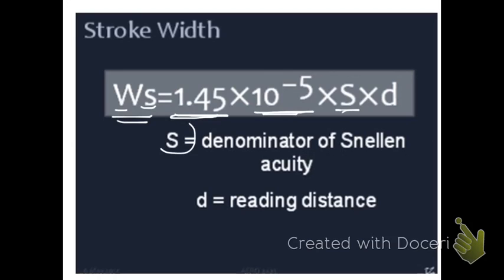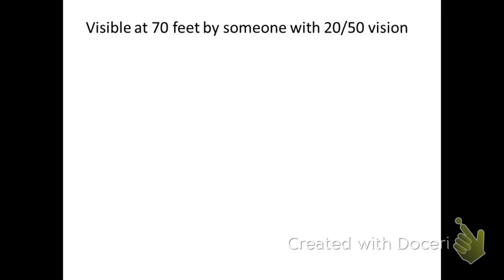S is the denominator of the Snellen acuity, and D is the distance, the reading distance that you want the reader to be able to read it from. So our illustration here, we want a sign that can be visible at 70 feet by someone with 20/50 vision.